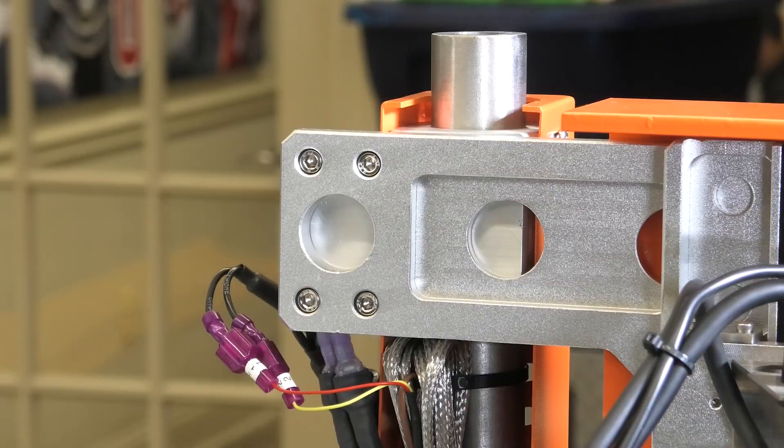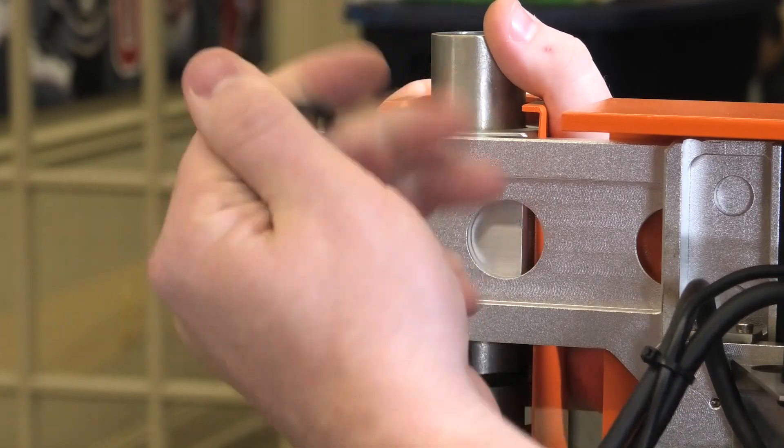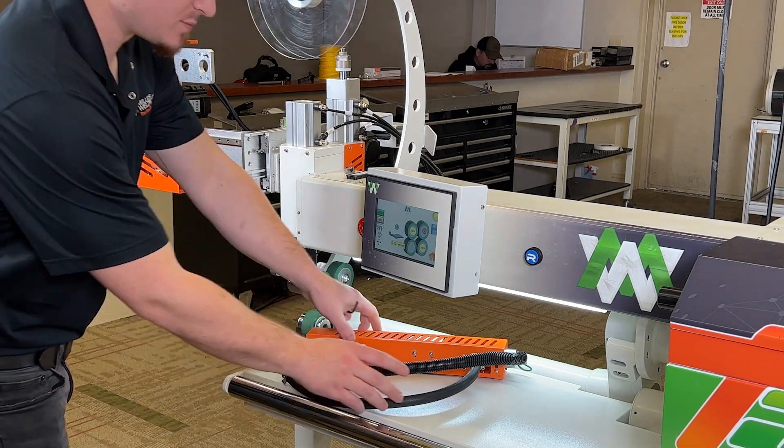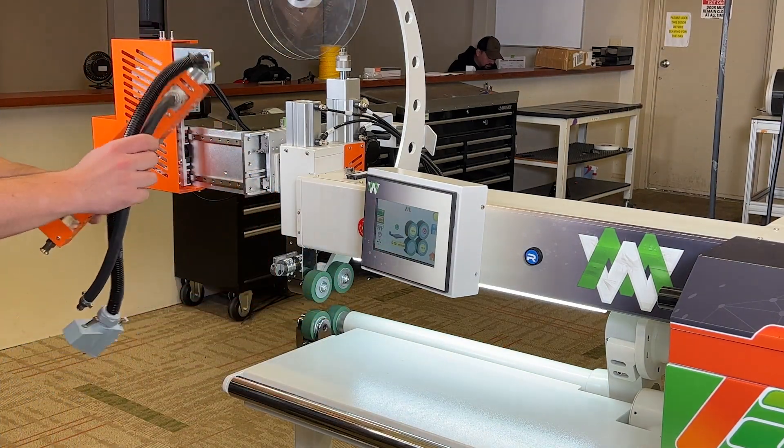Then you'll need to unscrew the four bolts that are behind the hot wedge heat system. Take it out and replace it with the hot air heat system by screwing in the four bolts.